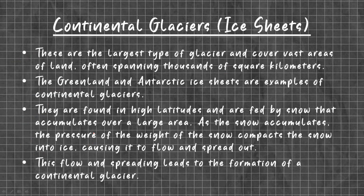Coming to the first type — Continental Glaciers or Ice Sheets. These are the largest type of glaciers and cover vast areas of land, often spanning thousands of square kilometers. The Greenland and Antarctica ice sheets are examples of continental glaciers. They are formed at high altitudes and are fed by snow that accumulates over large areas. As the snow accumulates, the pressure and weight of snow compacts it into ice, causing it to flow and spread out.